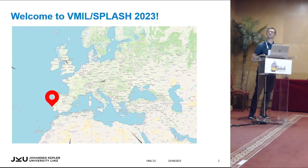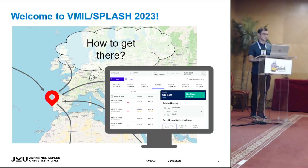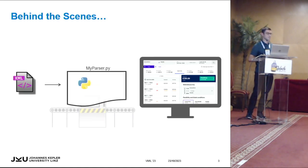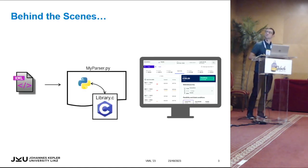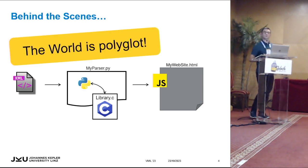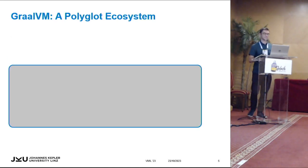How did you get here? Maybe at some point you used some kind of route planner. Let's take a look behind the scenes of such a route planner. From a server we might get XML data with arrival options, passed through a Python script using a C library internally, and then for a nice web page we use JavaScript. So we see that our world is polyglot, and the work I'm presenting is part of a polyglot project.